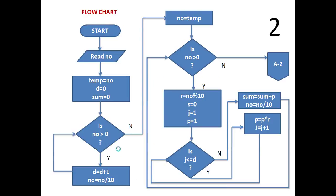The entire procedure will be discussed using this flowchart step by step. Start. Read NO. The user will insert a value into NO — suppose NO is 153. Temp will be 153, since we are assigning the value of NO into temp. D will be 0, sum will also be 0, and we have used a loop here to count the number of digits.